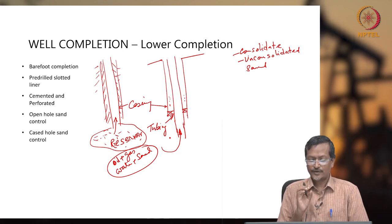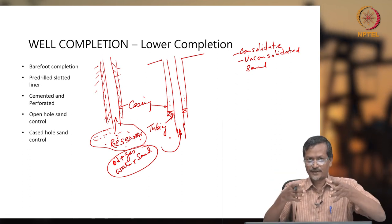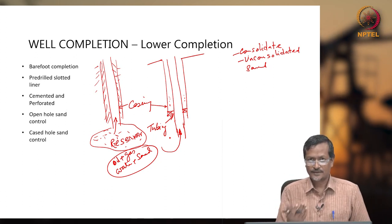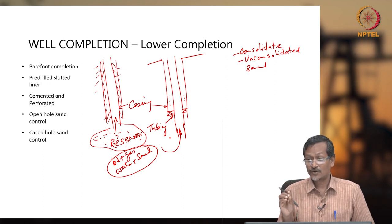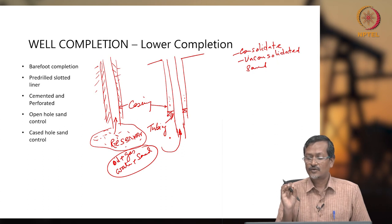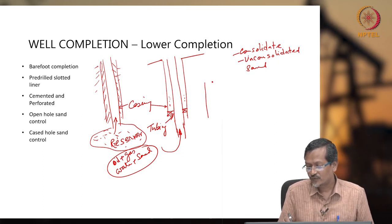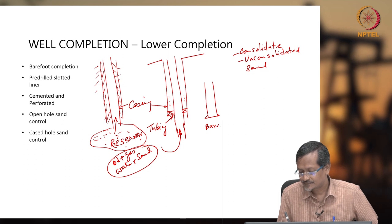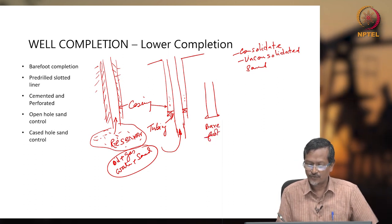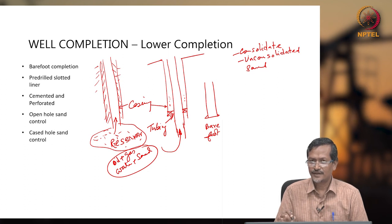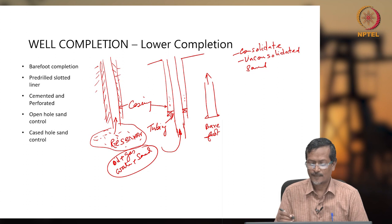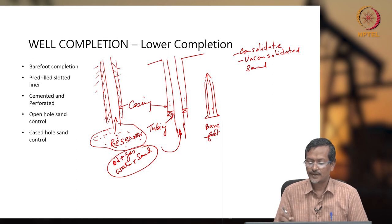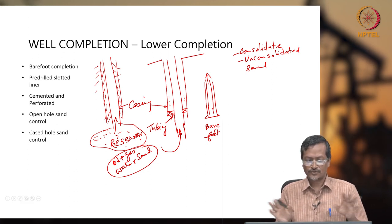During the completion stage, after drilling and cementing, you have to make the wellbore ready for production. You have to consider whether there is consolidated or unconsolidated sand. If there is consolidated sand, you can go for a barefoot completion — you drill a hole and get production with only casing or one tubing, without putting any sand control equipment.